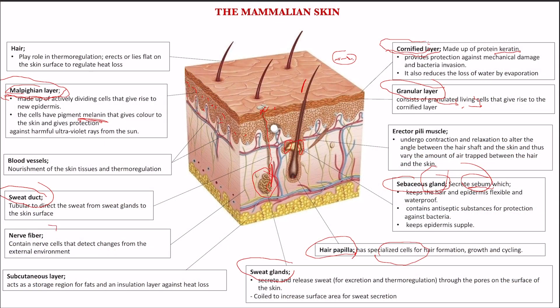Notice that the skin can also serve a role of perception. It is possible to detect sharp objects, heat, and coldness — that is the role of the skin in perception. The structures in the skin responsible for reception are the nerves. The nerve fibers contain nerve cells that are responsible for detecting changes in the external environment — that is stimuli.